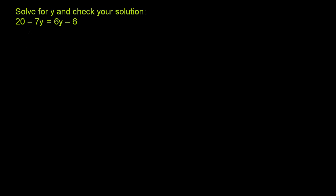I can add 7y to both sides of this equation. So I'm just adding 7y to both sides. Then the left-hand side of the equation, we have 20 minus 7y plus 7y. Those are going to cancel out. You're going to be just left with 20. And on the right-hand side of the equation, you're going to have 6y plus 7y, which is 13y. And then you have your minus 6.